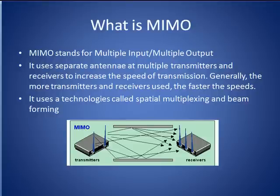MIMO's core technologies are spatial multiplexing and beamforming. We will touch on these difficult concepts in this tutorial. The horizontal gray bars in this picture depict how signals often arrive at a receiver after having bounced off distant objects. More on that later.